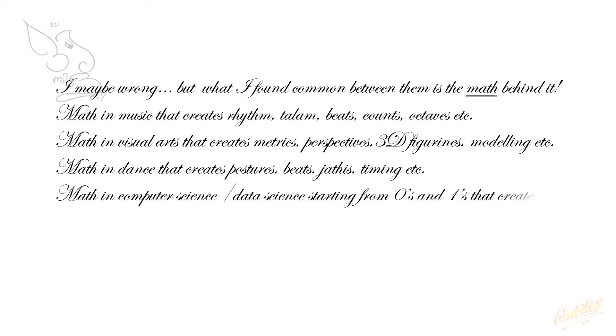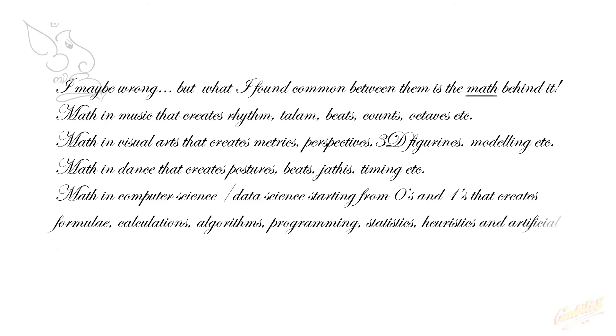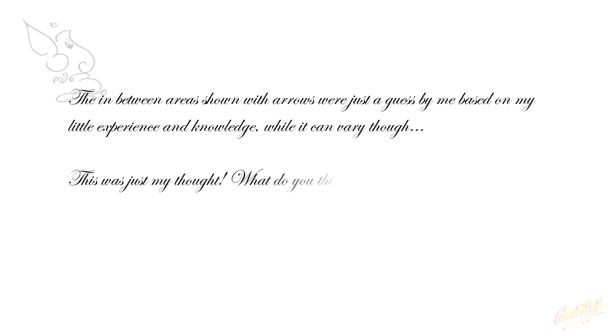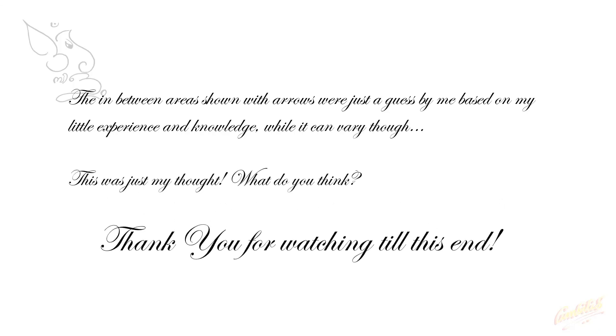Math and computer science — or data science — starting from zeros and ones, creates formulae, calculations, algorithms, programming, statistics, heuristics, and artificial intelligence, which comprises almost the whole of it. The in-between areas in the diagram shown with arrows was just a guess by me based on my little experience and knowledge, but it can vary. This was just my thought — what do you think?